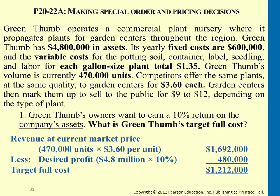It could be calculated other ways — 10% of sales price, 10% of assets — it depends on the problem. The problem will specifically tell you how to calculate desired profit, or directly give you the number. So the desired profit here is $480,000, but the current market price is $1,692,000. You subtract that desired profit from the market price to get your target cost — that is your goal in order to achieve the desired profit.